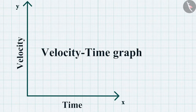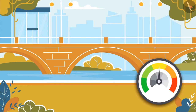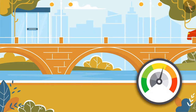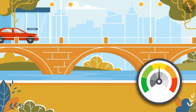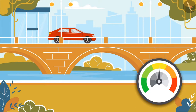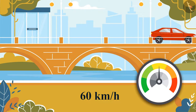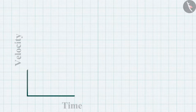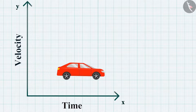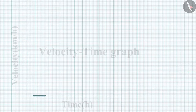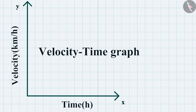Now let's study the velocity-time graph. The variation in velocity with time for an object moving in a straight line can be represented by a velocity-time graph. Suppose a car is moving at a uniform velocity of 60 kilometers per hour in a certain direction. Time is represented along the x-axis and velocity along the y-axis.